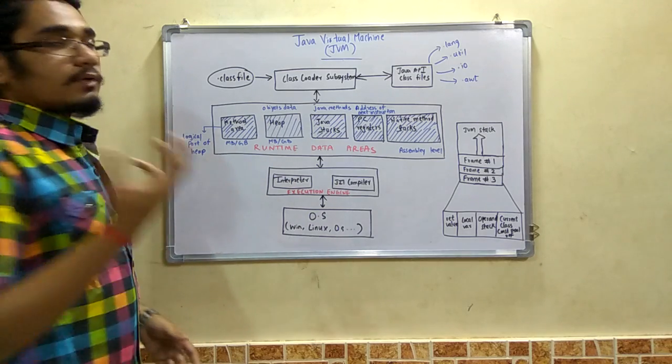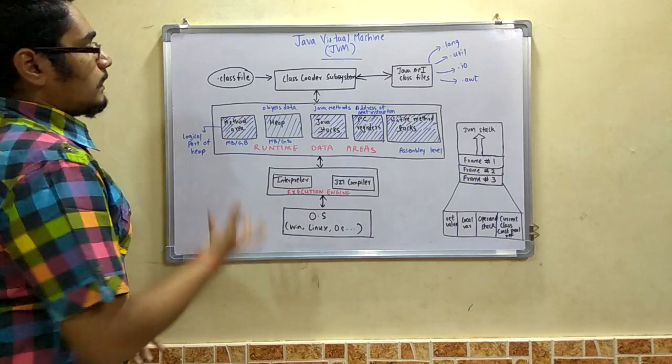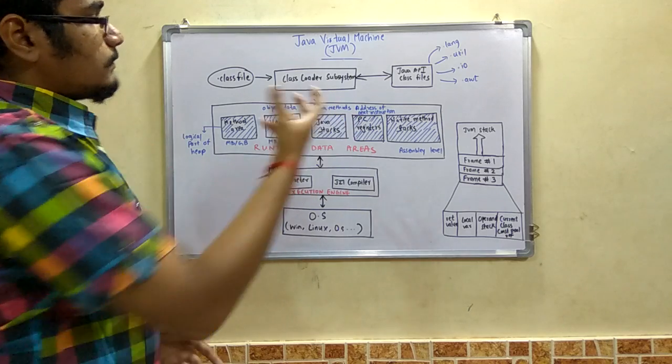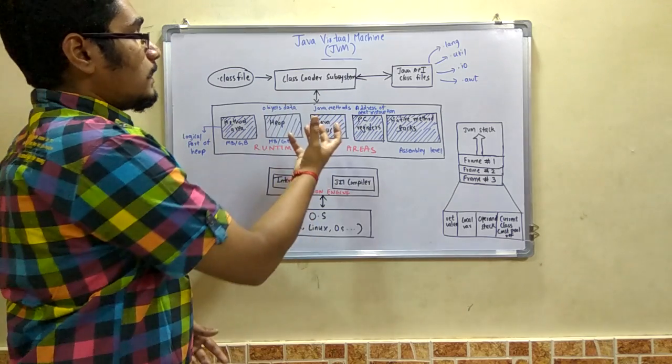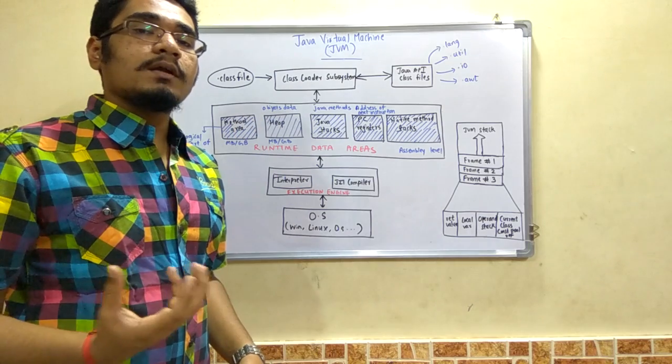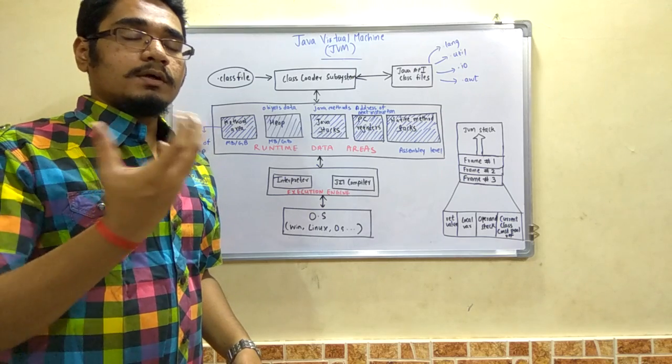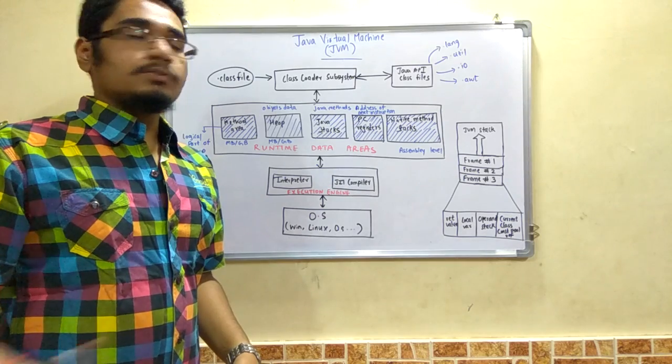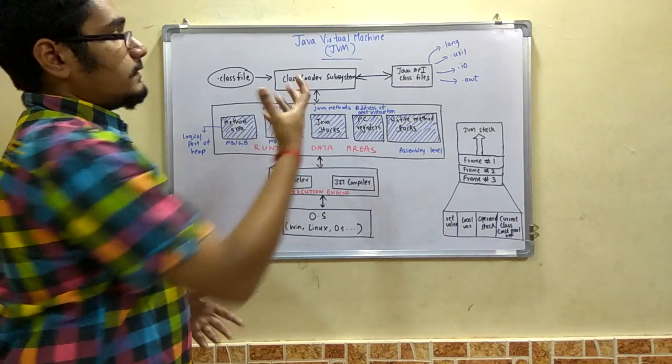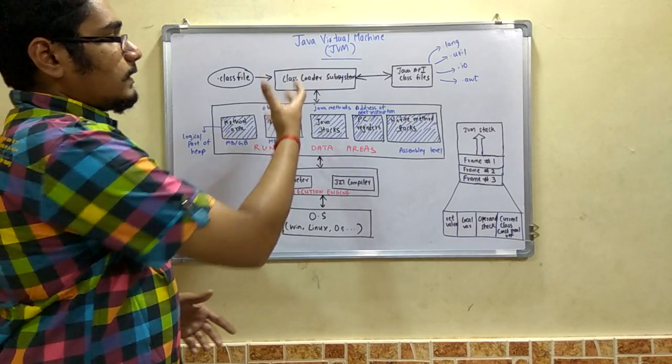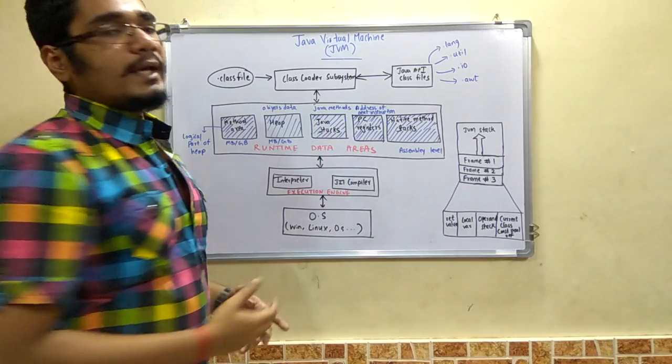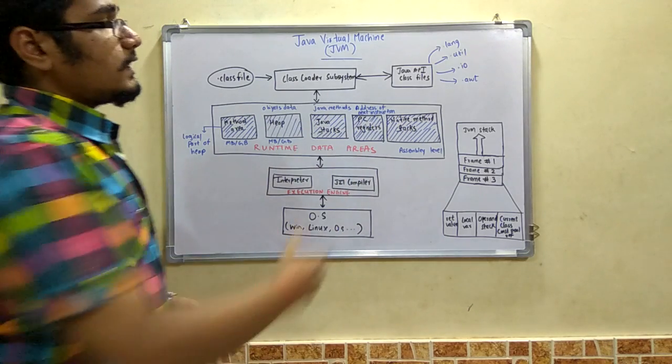So first of all you have a .class file from the .java file. Now this .class file is loaded into the class loader subsystem. This class loader subsystem is required for verification of the .class file, that is the bytecode, whether all the instructions are being properly converted from .java file to the .class file. Next is the Java API - the class loader subsystem gives its output to the Java API class files.